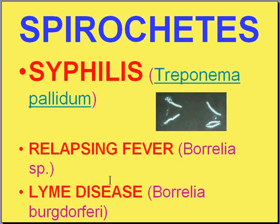Two tick-borne spirochetal diseases are caused by spirochetes not in the Treponema family but in the Borrelia family. Relapsing fever is caused by various Borrelia species — we can call these Borrelial infections. Lyme disease is another tick-borne spirochetal infection caused by a specific species called Borrelia burgdorferi.